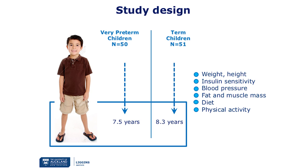Some factors like intravenous nutrition, dietary fortification, infections, diseases, antibiotics, and medicines like steroids in the early life stages of these preterm children can be implicated in the development of these adverse metabolic profiles. However, we still don't know exactly what causes these changes in these children.